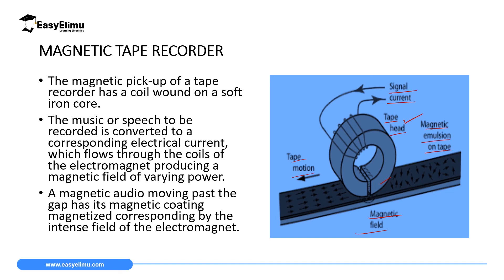As the magnetic tape passes through the head, the magnetic particles of the tape are aligned according to the strength and polarity of the magnetic field. This alignment records the original audio or video onto the tape. To play back the recording, the magnetic tape is run through a playback head on the tape recorder. The magnetic field from the tape induces an electrical signal in the playback head that mirrors the original sound or video. This electrical signal is then amplified and converted back into the original sound or video.